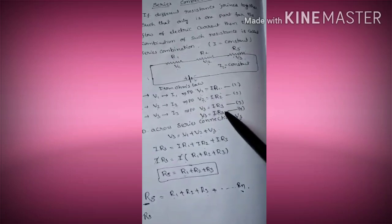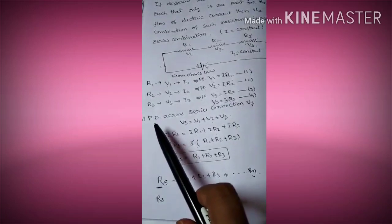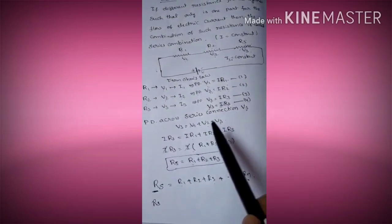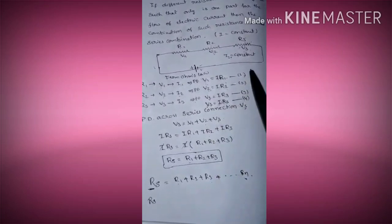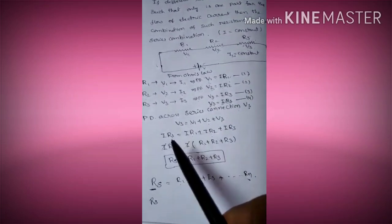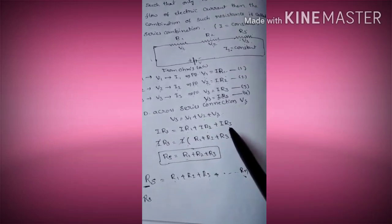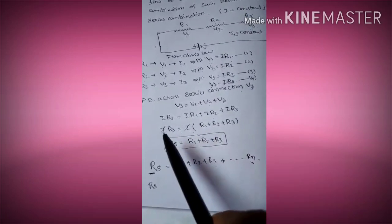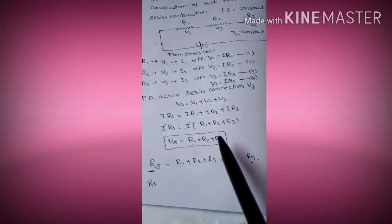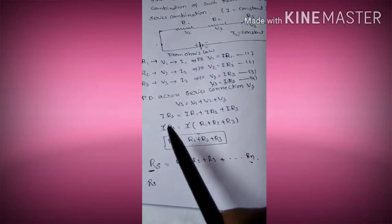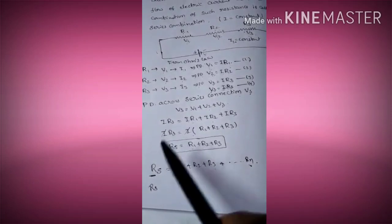So Vs = I × RS. The potential difference across the series connection is Vs = V1 + V2 + V3. Substituting all values from equations 1, 2, 3, and 4: I × RS = I × R1 + I × R2 + I × R3. Taking I as common, RS = R1 + R2 + R3. So the total resistance in a series connection is the sum of all individual resistances.